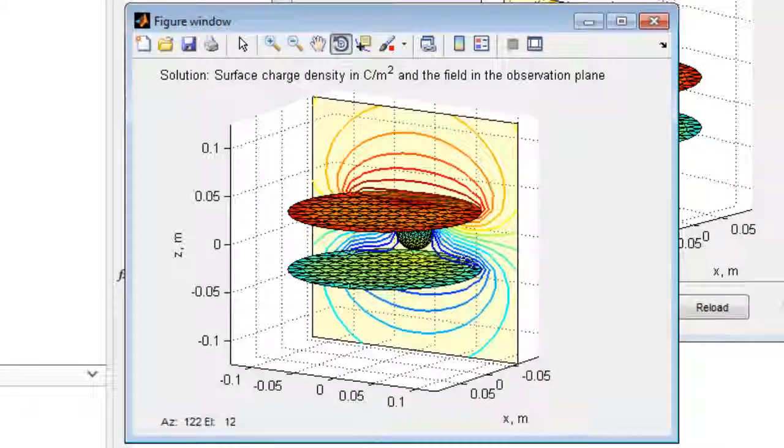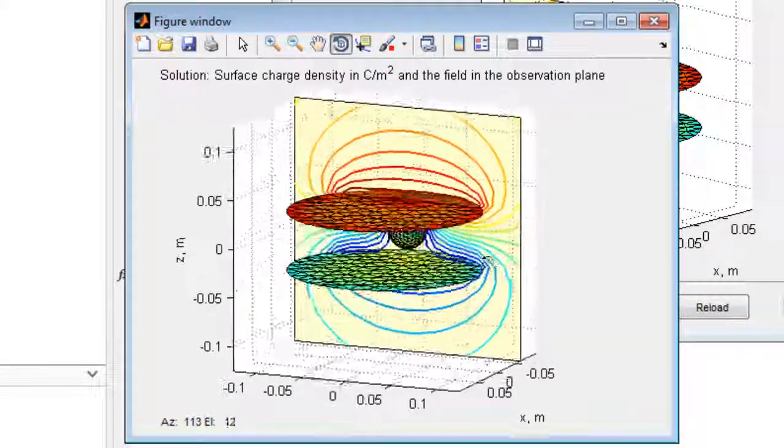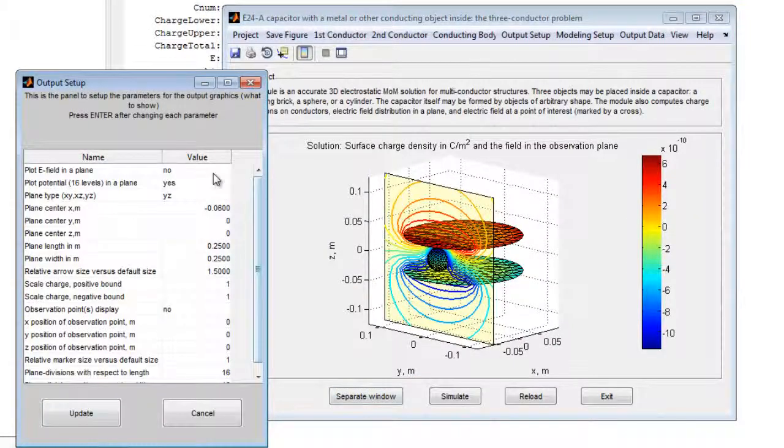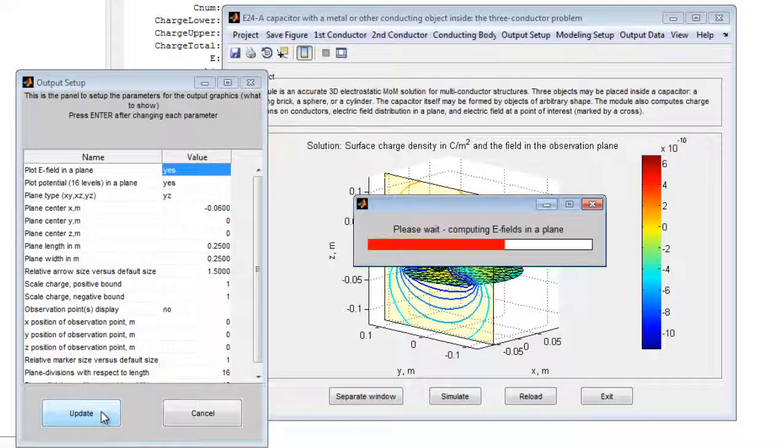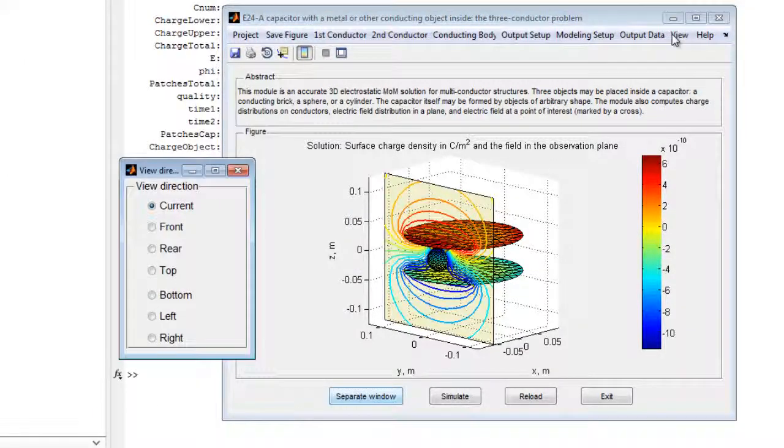This is easily apparent by viewing the figure from various angles. The electric field may be added to the plot by selecting this option and re-running the field calculations. The field strength is represented by different sized arrows. The figure orientation may be rotated to better observe these results.